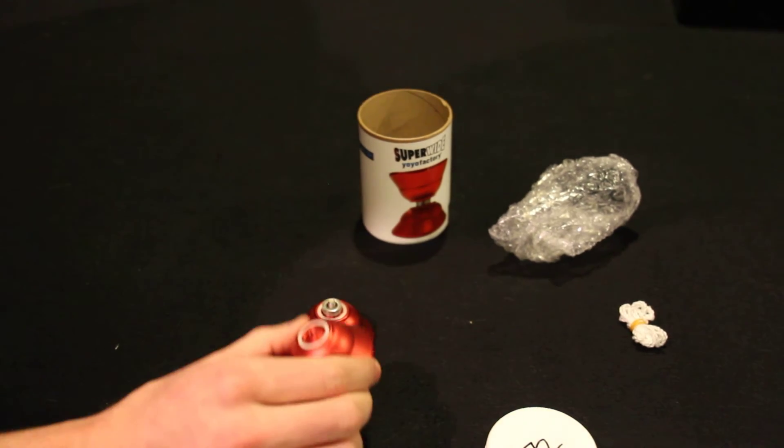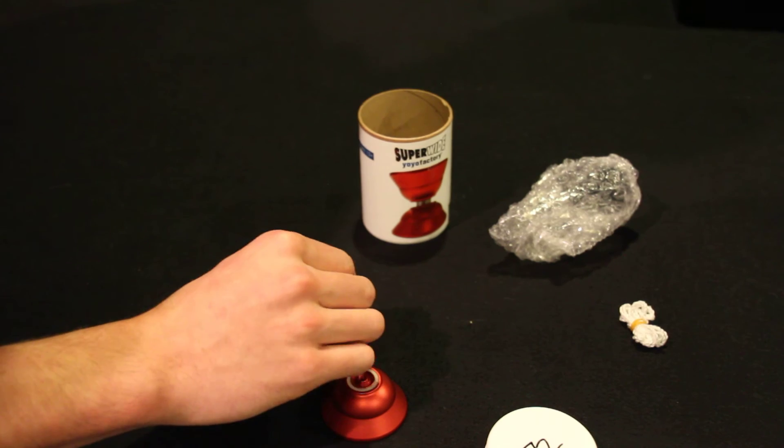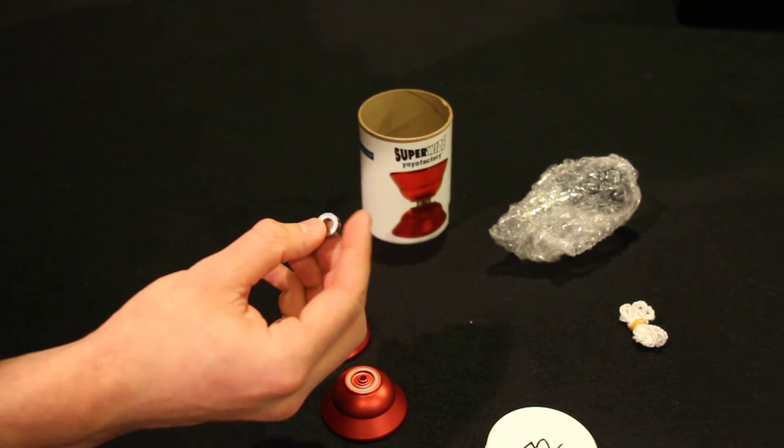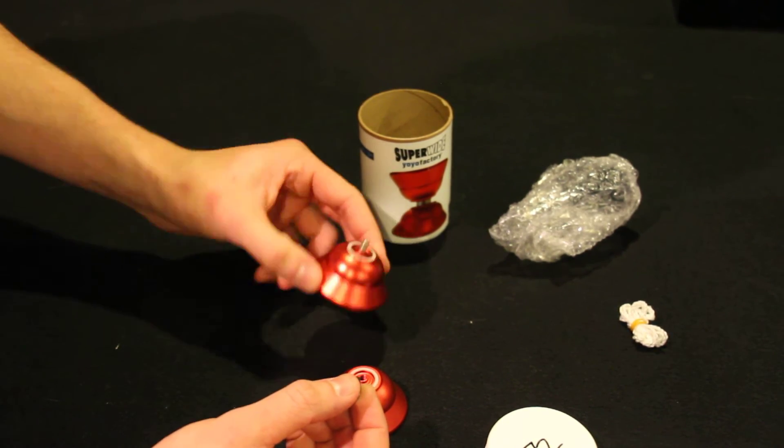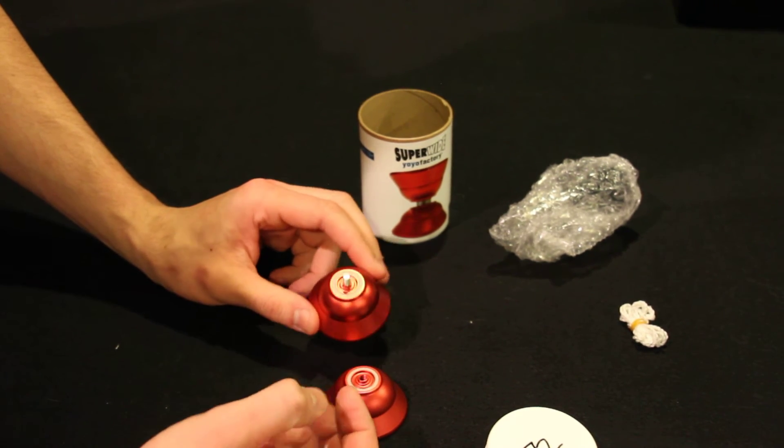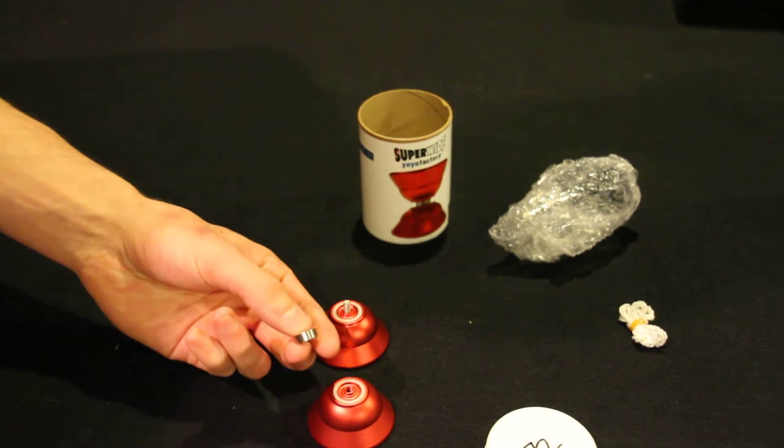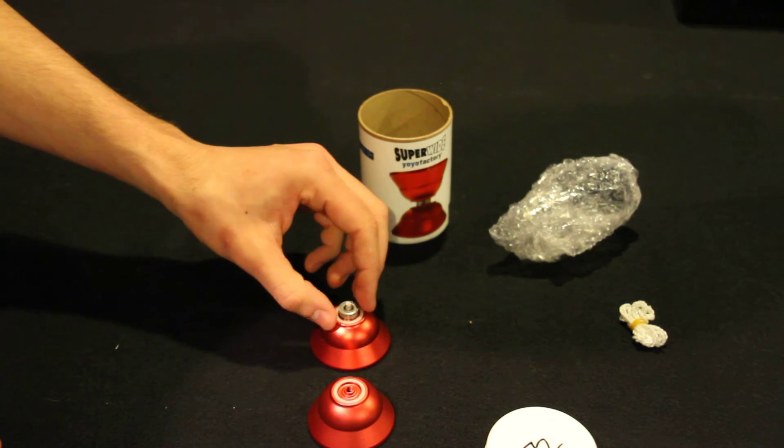I'll open it up. Alright, there it is. There's the silicone, there's the bearing. Now the bearing actually comes off the Yo-Yo. That's not usual with Yo-Yo Factory Yo-Yos. Maybe they'll clamp on later after use, but very wide. There's a spec bearing, size C.